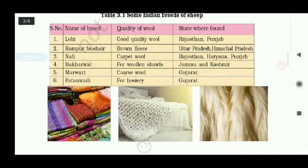Below this table you can see three figures. The first figure shows Pashmina wool, which is generally made from the under-fur of Kashmiri goats and is very soft — Pashmina shawls are very famous. The second figure shows carpet wool, and the third figure shows fur obtained from yak. So these were a few Indian breeds that are reared for obtaining different qualities of wool.